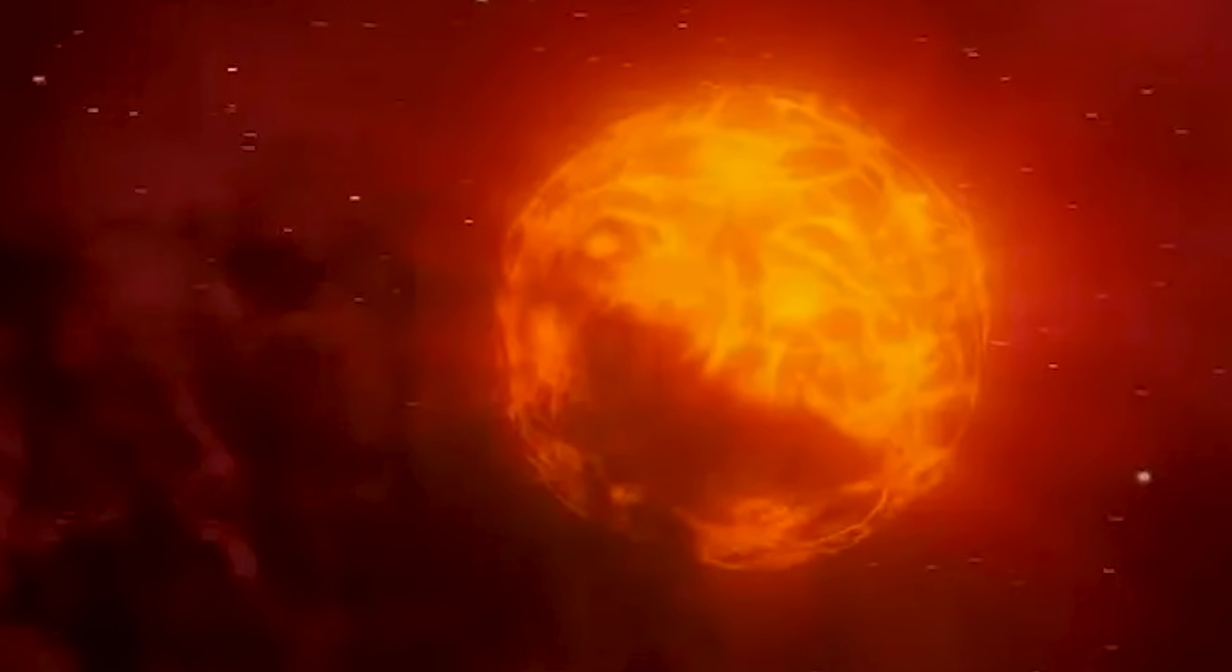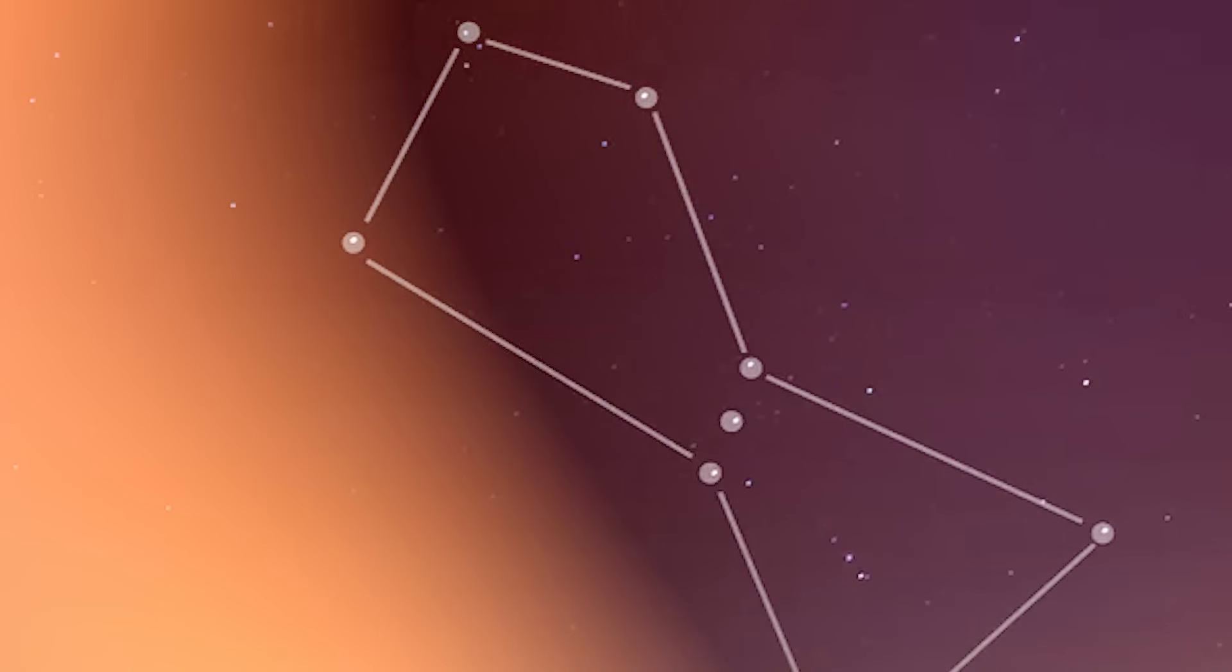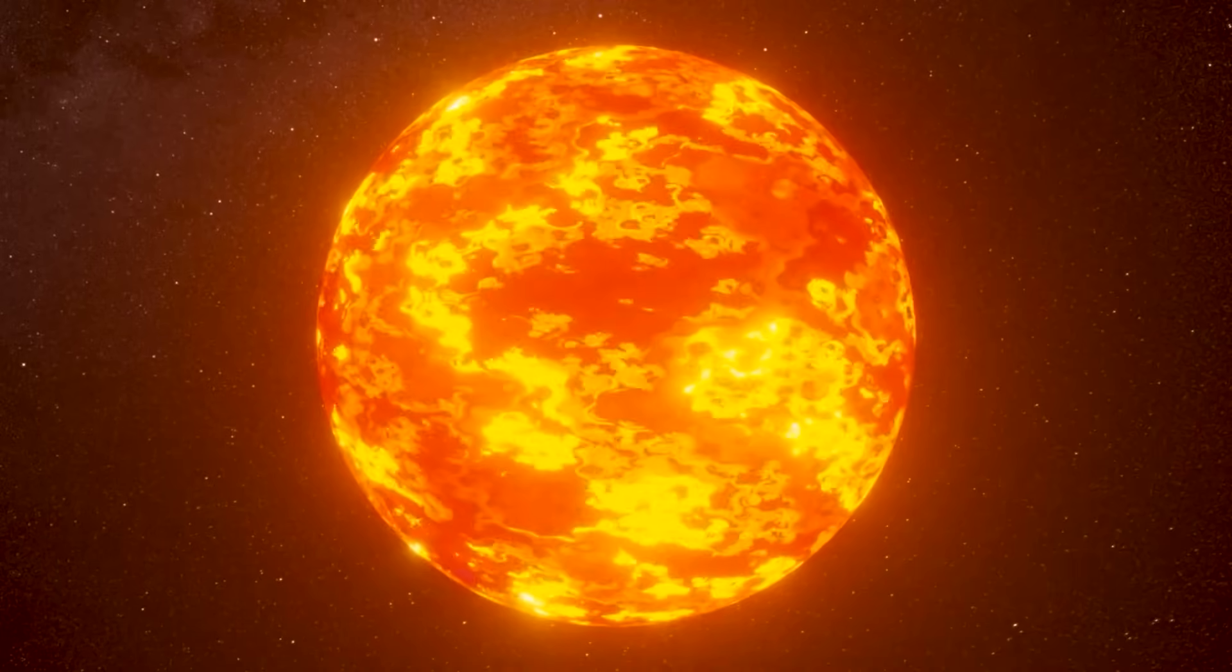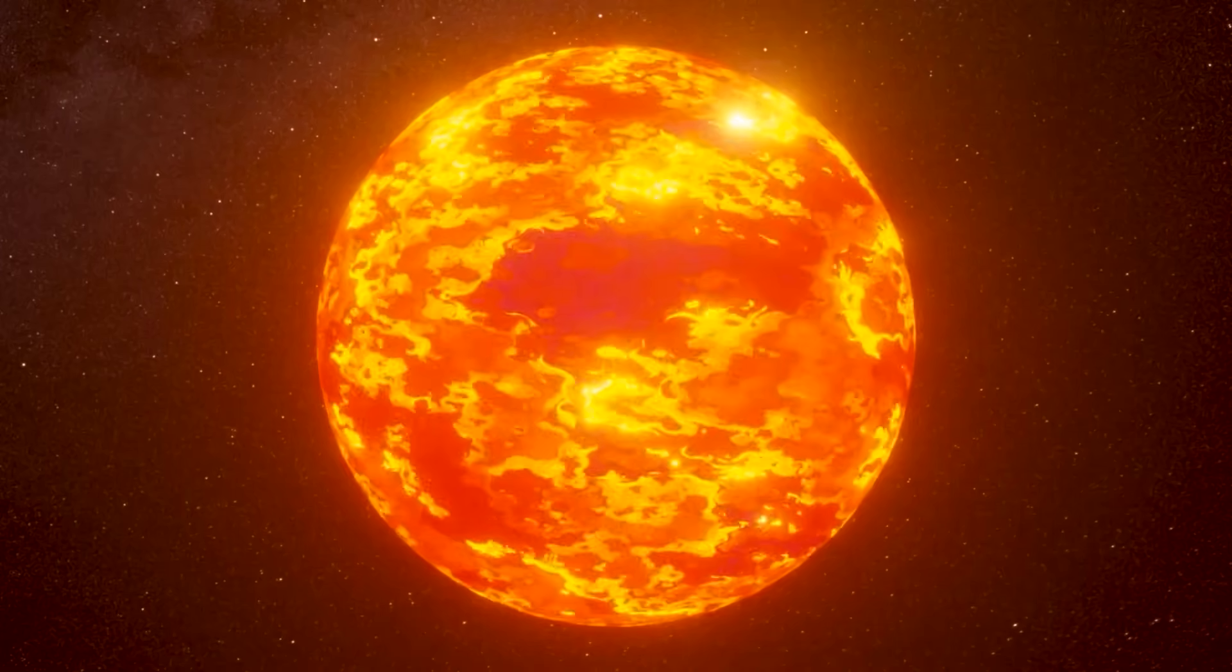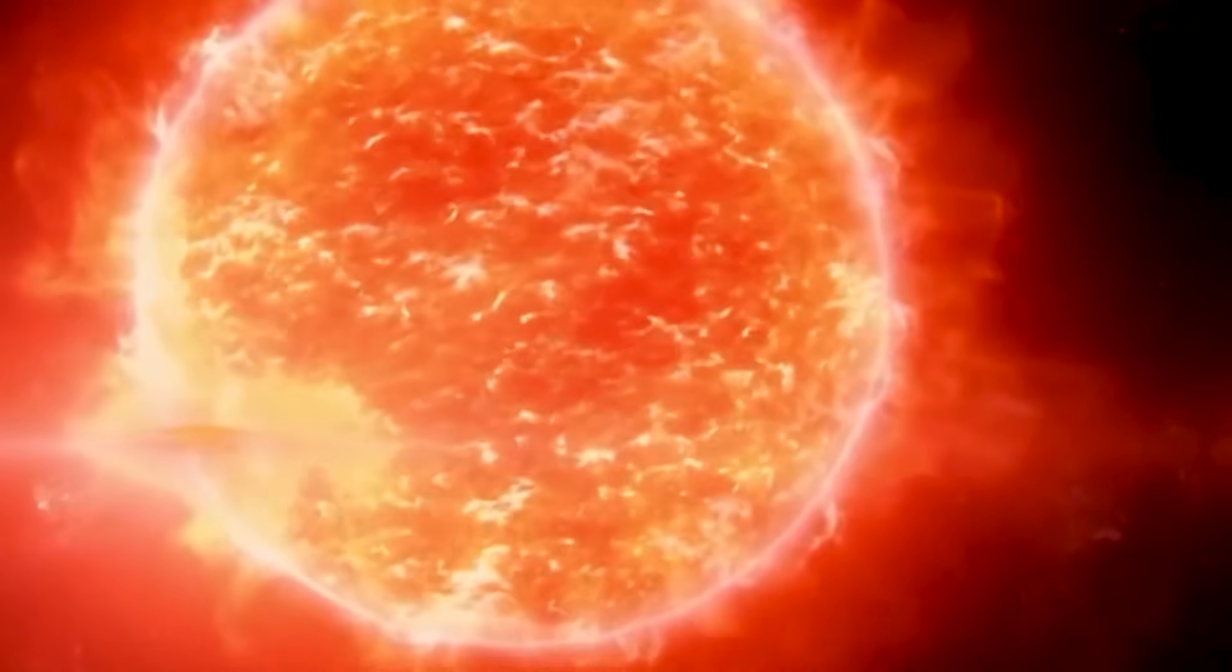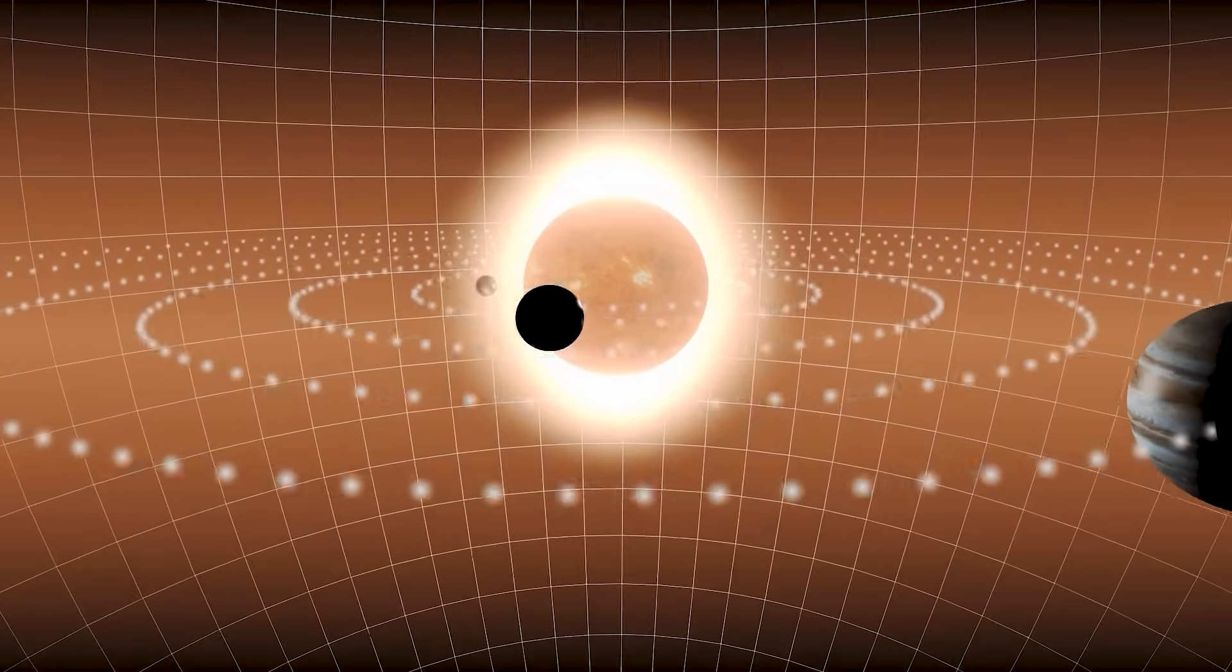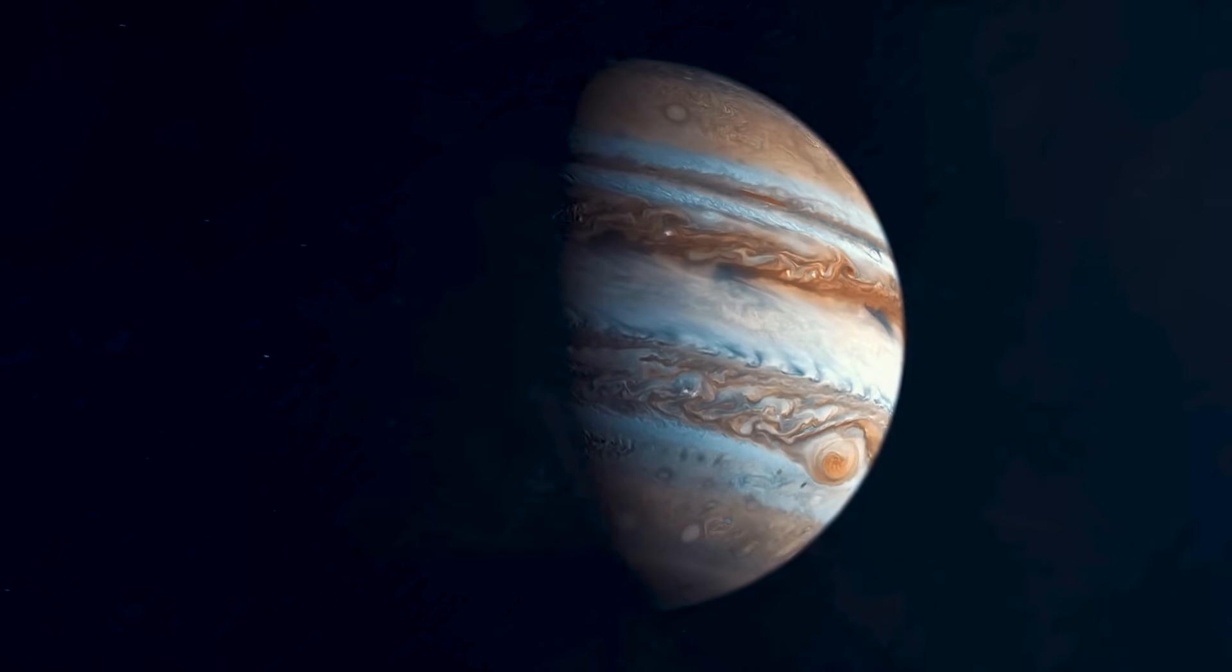Betelgeuse is another remarkable red supergiant star located in the Orion constellation that holds great significance in the night sky. It is known for its impressive size and brightness, shining brighter than many other stars. Betelgeuse is 1,000 times wider than that of our sun. To put it into perspective, if we were to place Betelgeuse in the middle of our solar system, it would extend close to Jupiter.